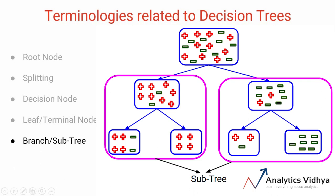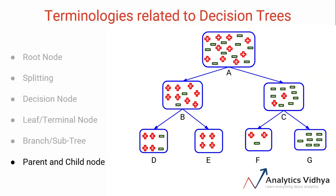We then have parent and child nodes. A node which is divided into sub-nodes is called a parent node, whereas the sub-nodes will be called the child of the parent node. Don't worry, let me explain this with a very simple example.